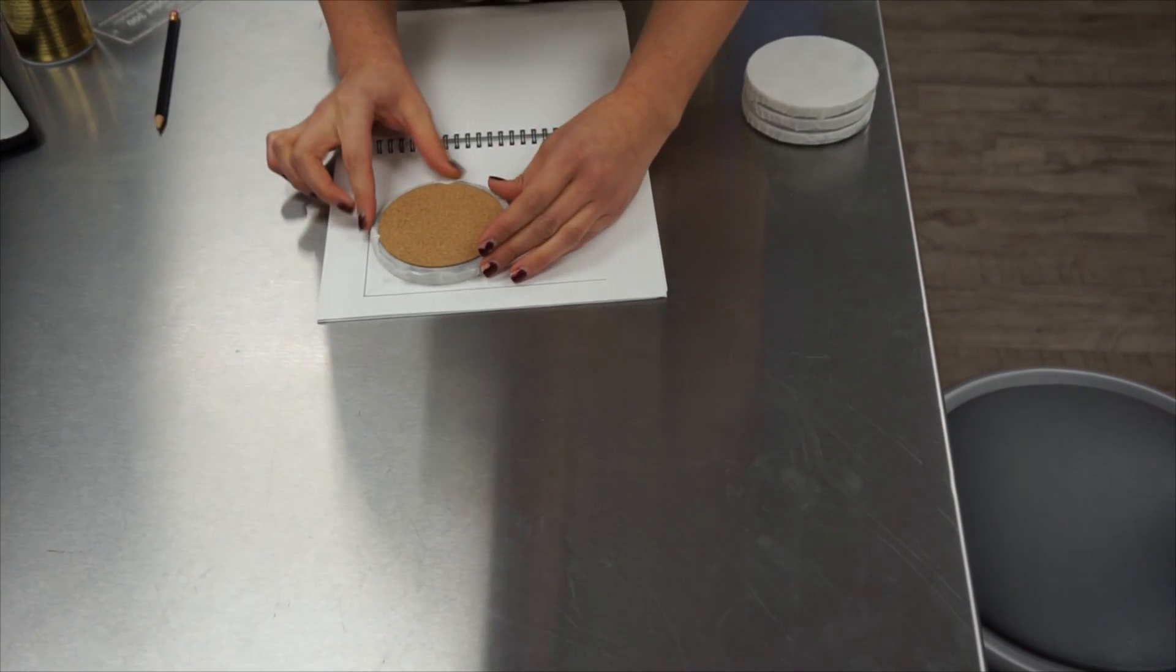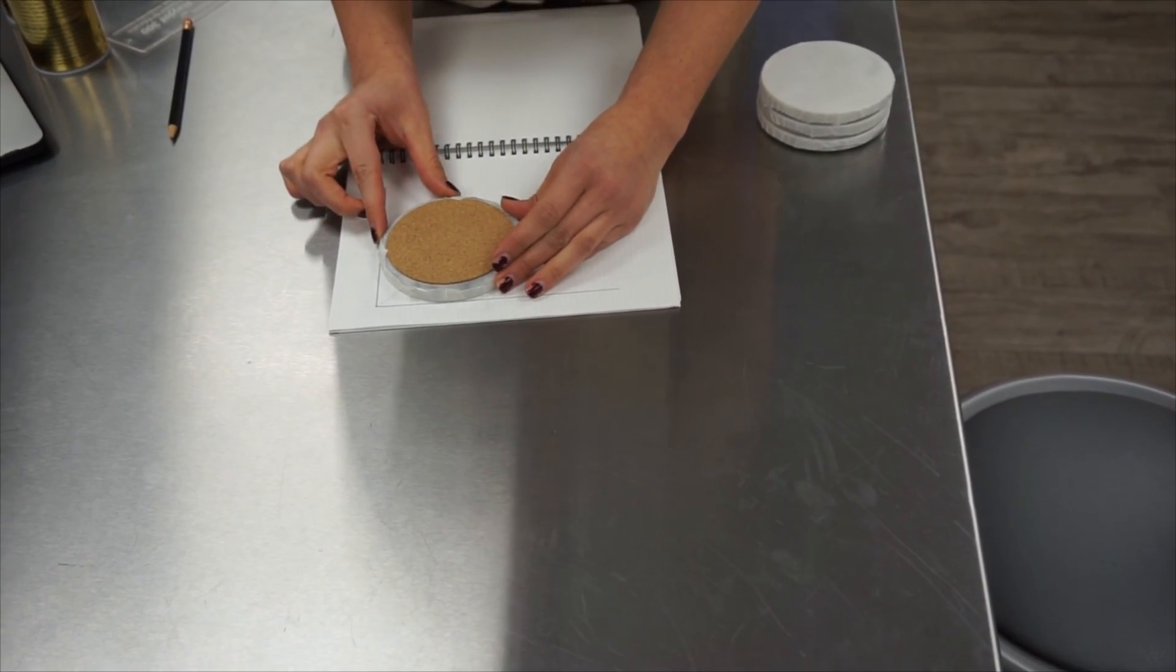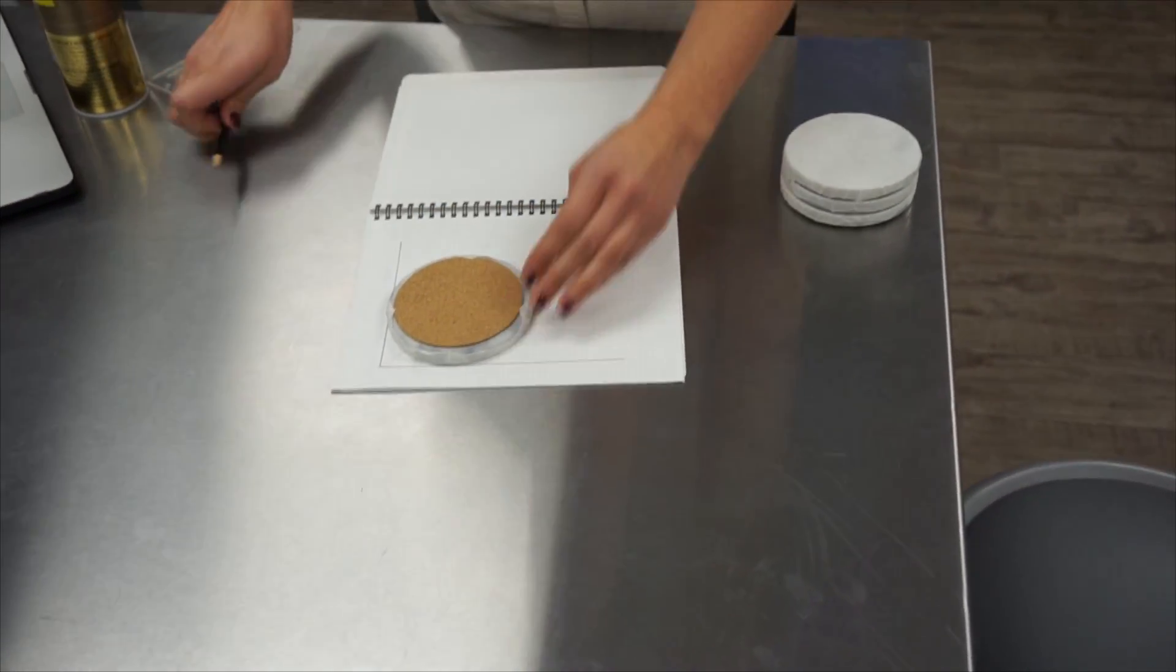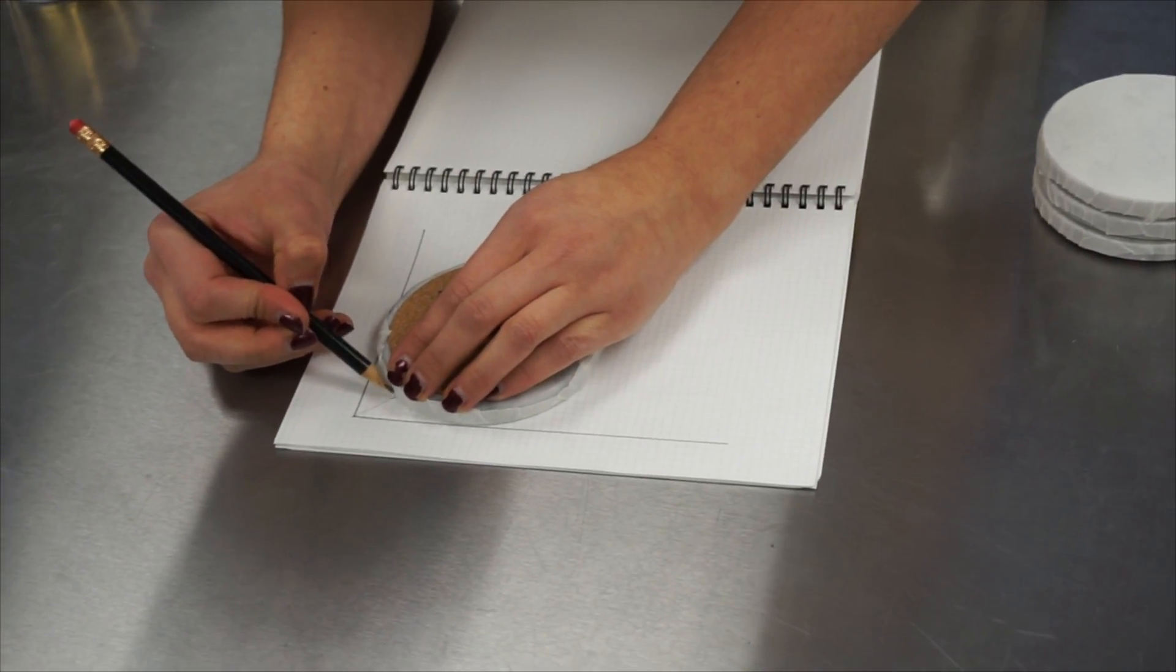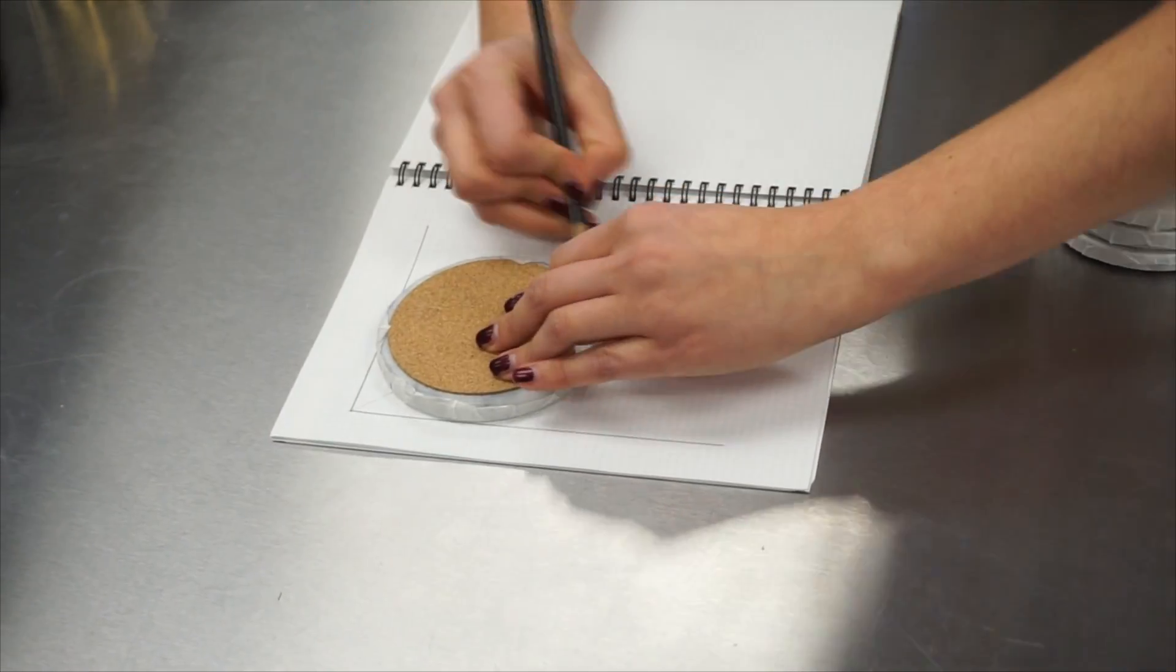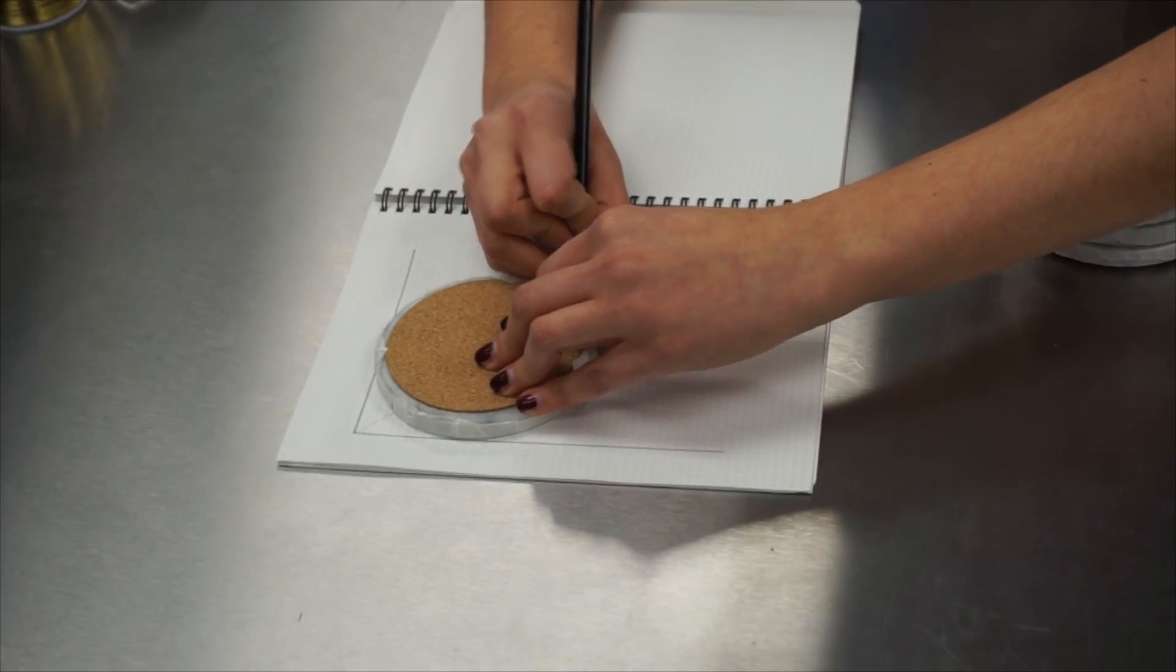You take your coaster and you line it up to the two edges, and then using a pencil, you mark the 45 degree line on one side and then on the other side.